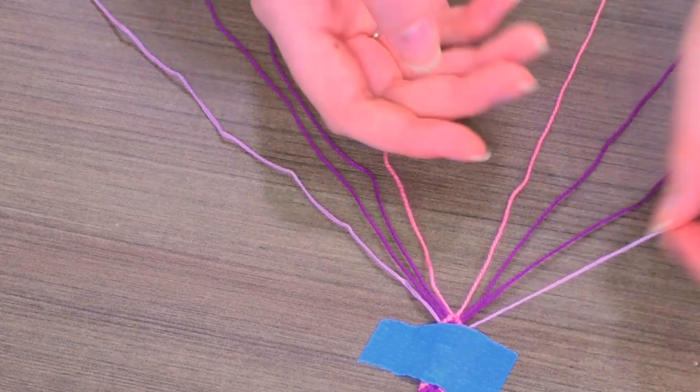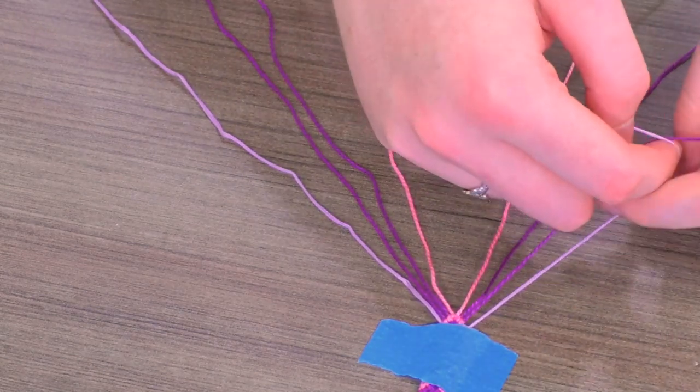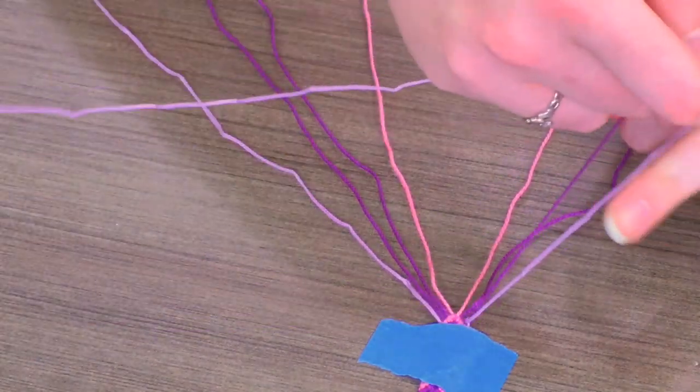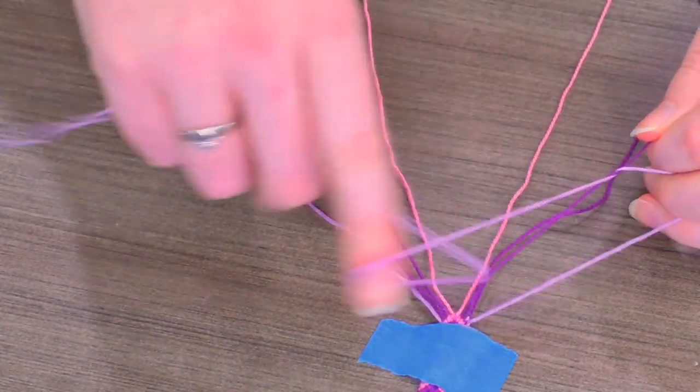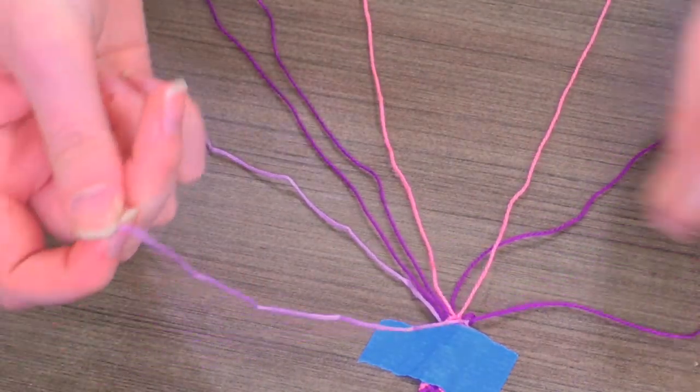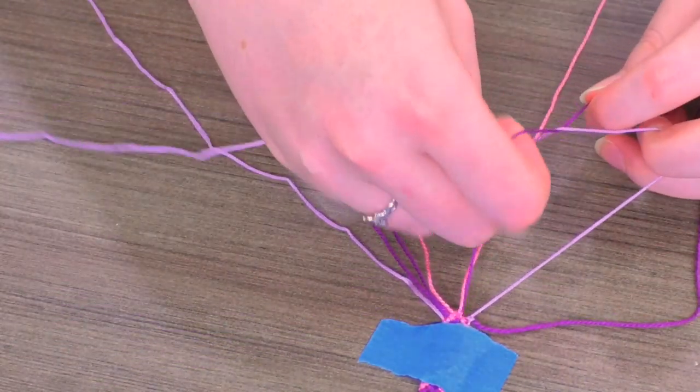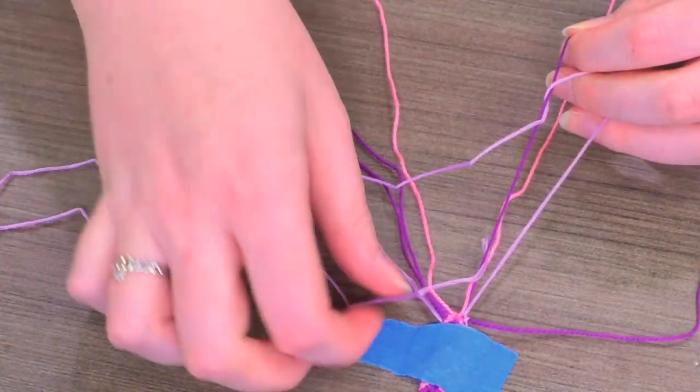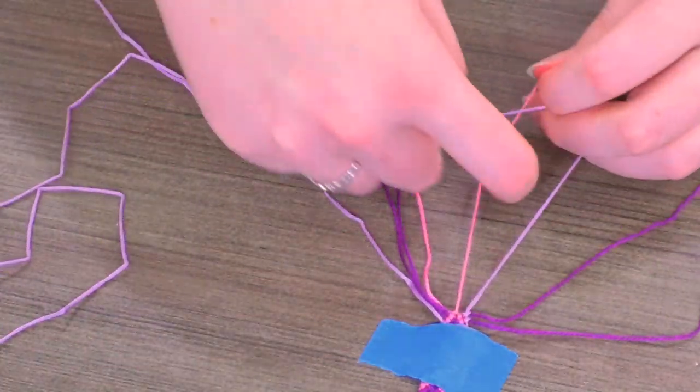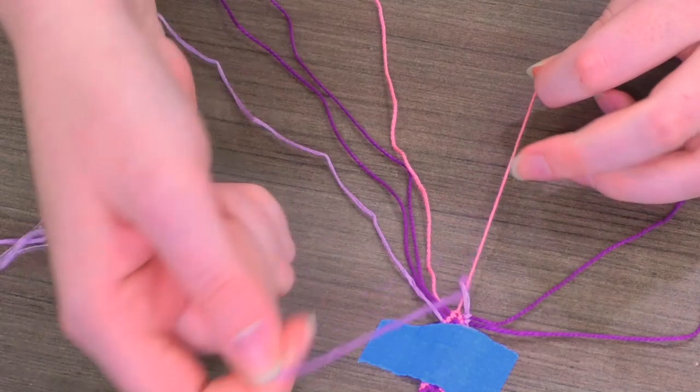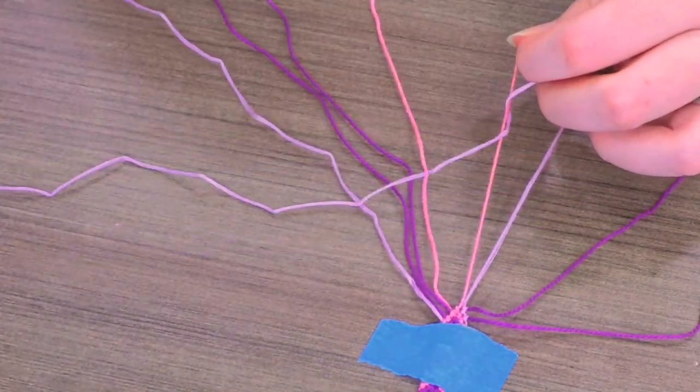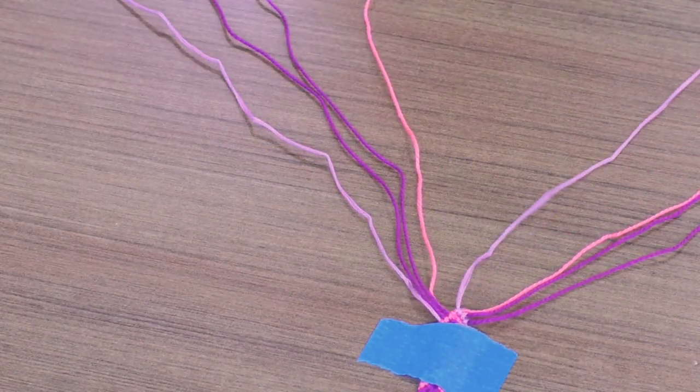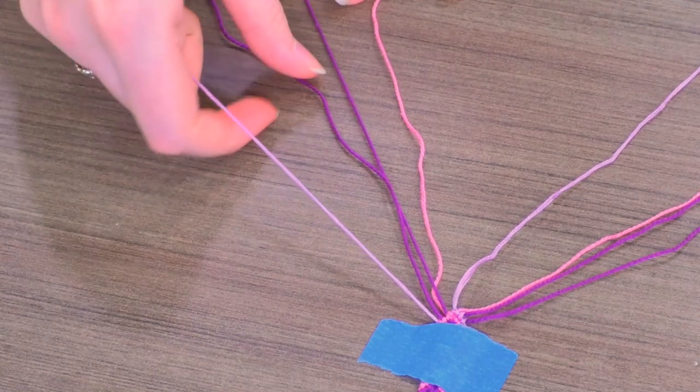So to start, you're doing the same motion you were doing before. Create your four, loop under, and up, make a knot. Same thing, make your second knot. Move on to the next string. But now that I've gotten to the middle I'm going to stop. Set those strings aside. Go to the other side.